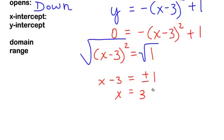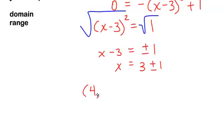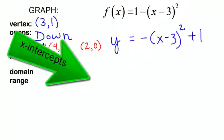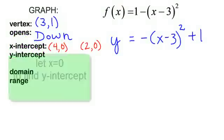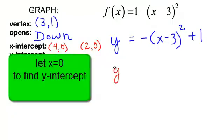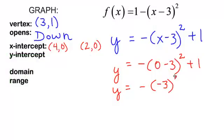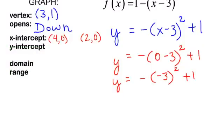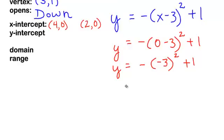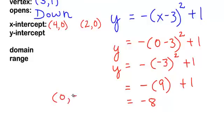So I will have x minus 3 equals plus or minus 1. The square root of 1 is simply 1. Add 3 to both sides — I will get positive 3 plus or minus 1. So 3 plus 1 is 4, and 3 minus 1 is 2. Those are my x-intercepts. Now I'm going to look for my y-intercept by letting x equal 0. I will have 0 minus 3, giving me negative 3 in the parentheses. Do your exponents first — negative 3 squared is 9. So I will have negative 9 plus 1, which is negative 8. My y-intercept is going to be 0, negative 8.